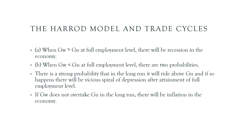We also have to understand how the Harrod model is connected with trade cycles — that is, business cycles. We need to look into two different types of movements with respect to the natural growth rate and warranted growth rate: what will happen if the warranted growth rate is more than the natural growth rate, and what will happen when the warranted growth rate is less than the natural growth rate.